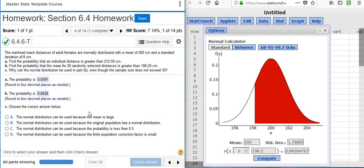And now the last part, Part C asks, Why can the normal distribution be used in Part B even though the sample size does not exceed 30?